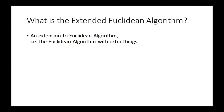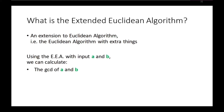What is the extended Euclidean algorithm? Well, it's an extension to the Euclidean algorithm, so it's the Euclidean algorithm with some extra things. Using the extended Euclidean algorithm with input A and B, we can of course calculate the GCD of A and B. But now we can also calculate S and T such that S times A plus T times B equals the GCD of A and B.